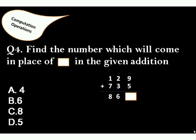Question 4: Find the number which will come in place of box in the given addition. Answer is option A. As 9 plus 5 equals 14, so 4 will come at unit's place.